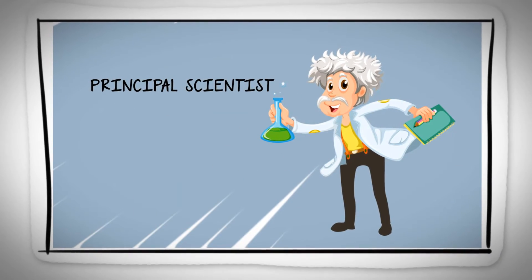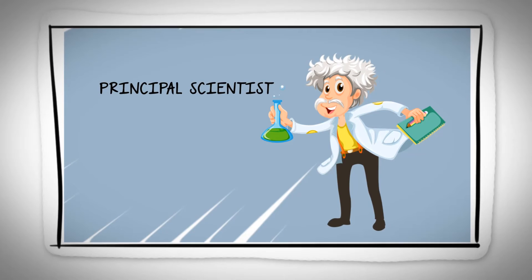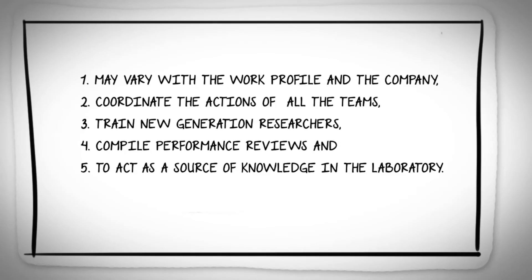Principal Scientist. Job responsibilities of a principal scientist may vary with the work profile and the company, but the prime role remains the same: to coordinate the actions of all the teams, to train new generation researchers, to compile performance reviews, and to act as a source of knowledge in the laboratory. The job responsibilities, educational requirement, and average salary are as follows.